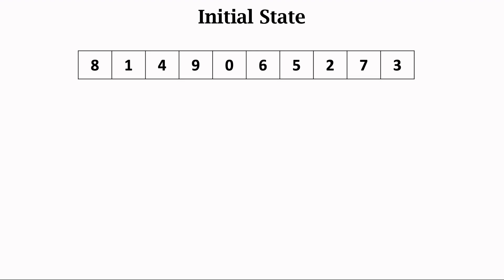Let's study insertion sort. I will use an example to demonstrate insertion sort. The input is an array with 10 elements. Initially, the array is unordered. Let's sort the 10 elements in ascending order. Now the first iteration begins. The first iteration works on the first two elements. I mark the first two elements using a red rectangle.